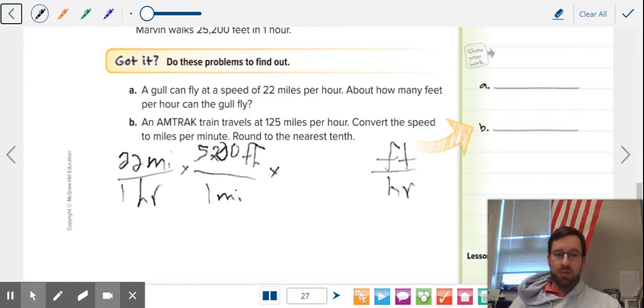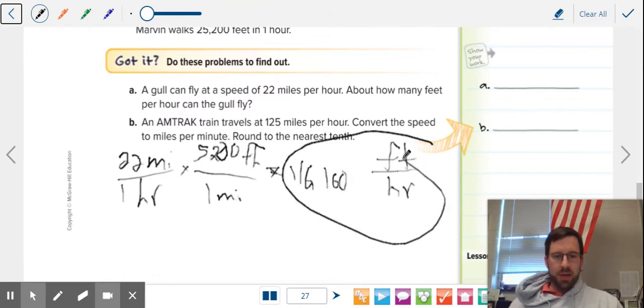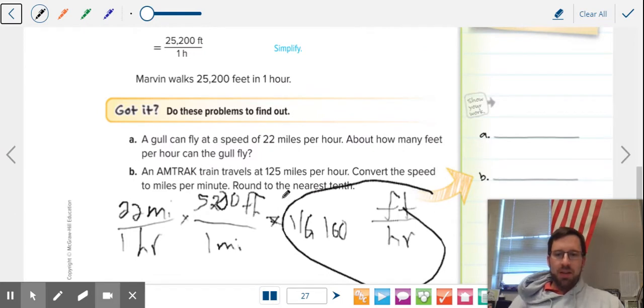So 22 times 5,280 is 116,160. That's supposed to be an equal sign. 116,160 feet per hour. Boom. It's easy peasy.